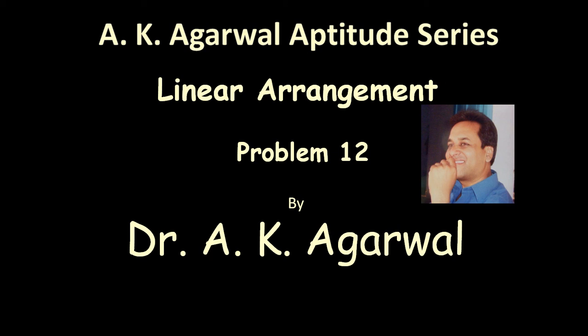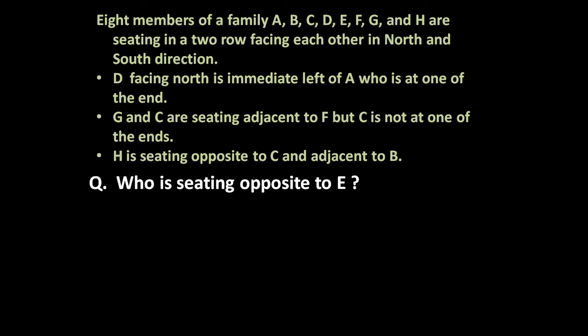Hello friends and welcome to AK Agroal Aptitude series. In this session we are going to learn a technique for solving a problem on linear arrangement. The given problem is: eight members of a family A, B, C, D, E, F, G and H are sitting in two rows facing each other in north and south direction. D facing north is immediately left of A, who is at one of the ends. G and C are sitting adjacent to F but C is not at one of the ends. H is sitting opposite to C and adjacent to B. Now, who is sitting opposite to E?